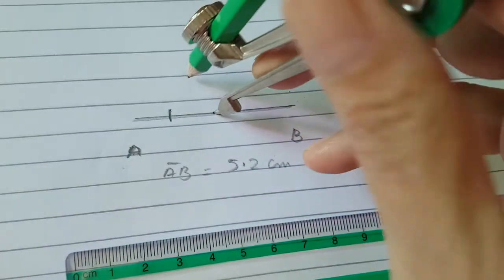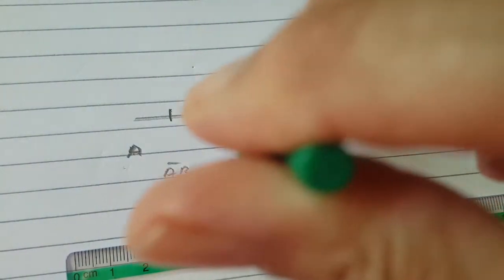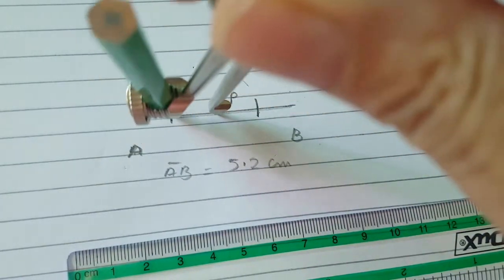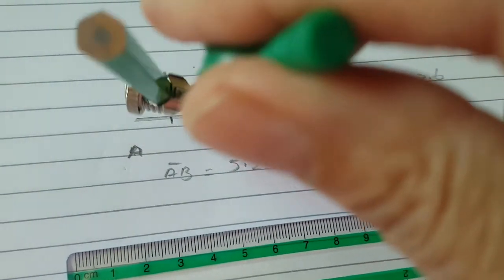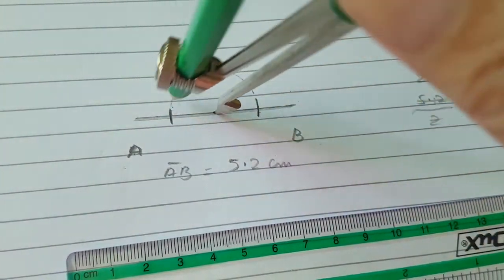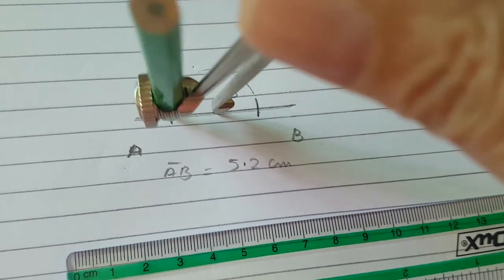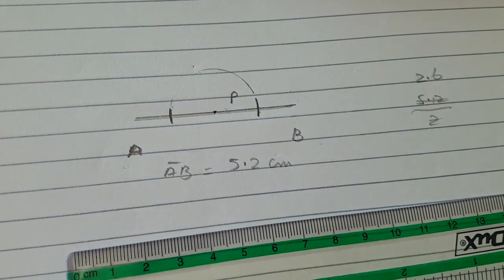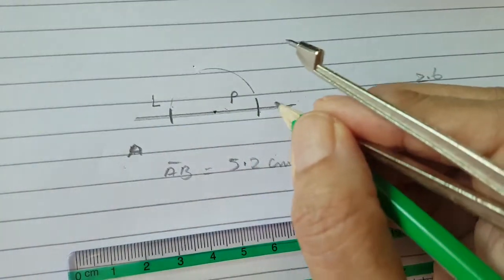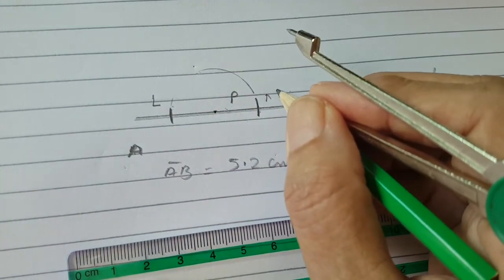With the same radius you will cut the AB line at two points. You have to draw a semicircle, not a whole semicircle, but you will cut the AB line at two different points from the middle. Let this point be L and this is M.